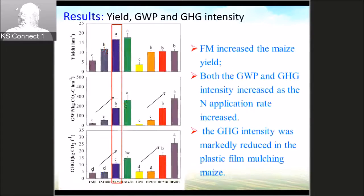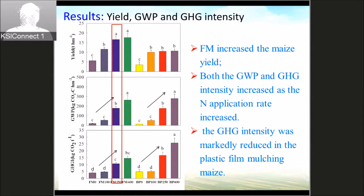We also calculated the yield-scaled global warming potential, also called greenhouse gas intensity. The results show that the film mulching practice can increase the maize yield. Both the global warming potential and greenhouse gas intensity increase as the nitrogen application rate increases. However, due to the film mulching practice increasing yield, the yield-scaled global warming potential, which represents the GWP required to produce one ton of grain yield, was reduced in the plastic film mulching maize.